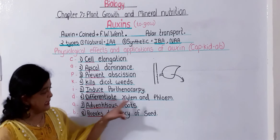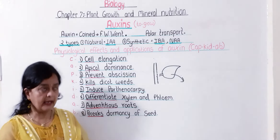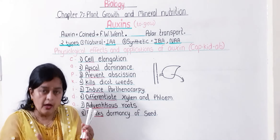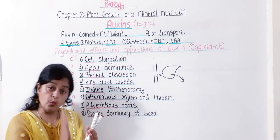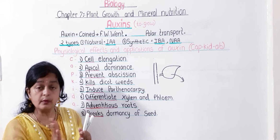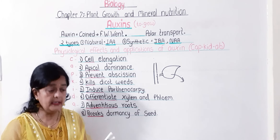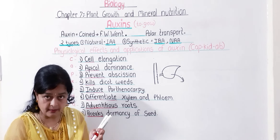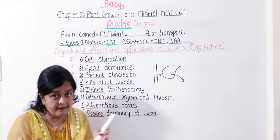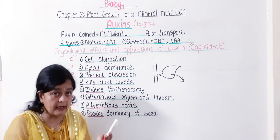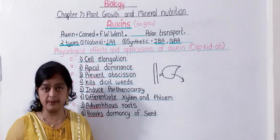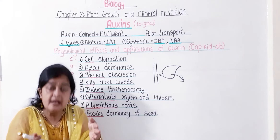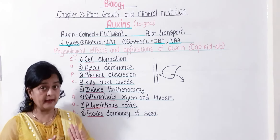The sixth function is that auxin differentiates xylem and phloem. Xylem and phloem are separated because of cambium. Auxin allows cambium to undergo cell division, and because of this division of cambium, xylem and phloem are produced. So auxin differentiates or separates xylem and phloem by bringing about cell division.